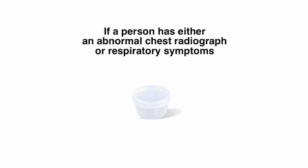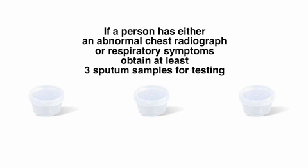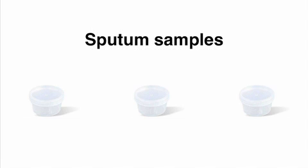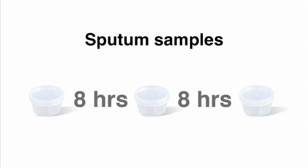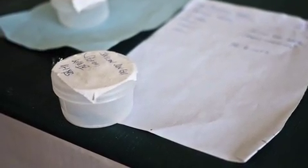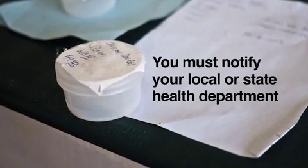If the chest radiograph is normal and there aren't any symptoms, then diagnose the patient with latent TB infection. If a person has either an abnormal chest radiograph or respiratory symptoms such as cough, obtain at least three sputum samples for testing. Send the sputum samples to the lab for AFB smear and culture. Sputum samples should be collected at least eight hours apart and one should be collected in the early morning. If you diagnose someone with TB disease, you must notify your local or state health department.